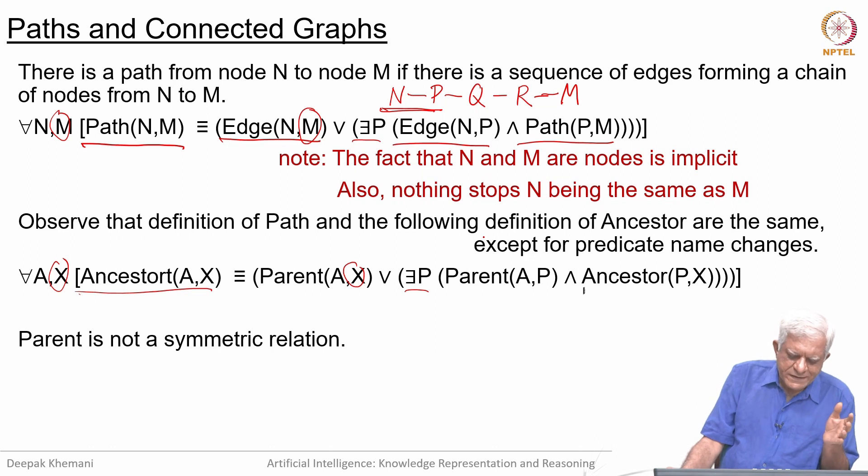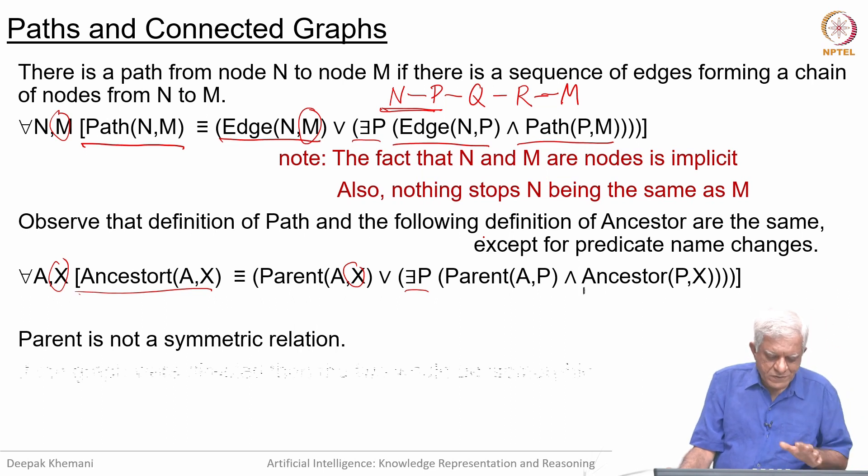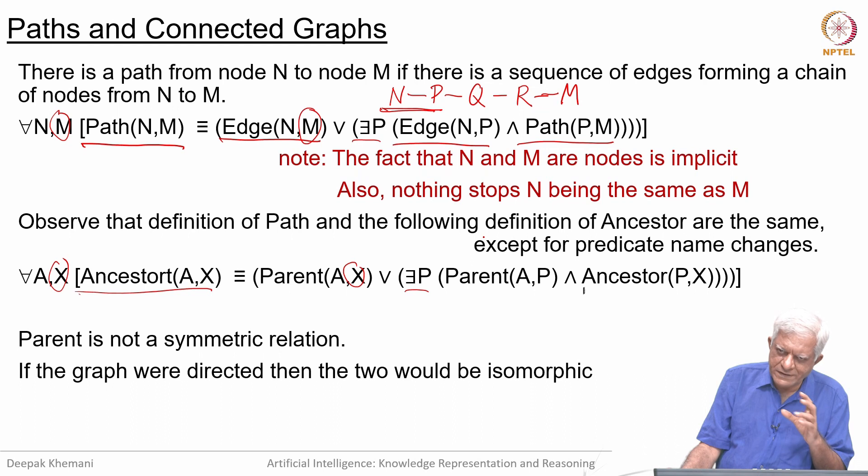The only difference is that parent is not a symmetric relation whereas we can define the edge to be a symmetric relation. If the edge was not a symmetric relation, which means that the graph was a directed graph, then the two would simply become isomorphic. If A is a parent of B then there is an edge from A to B. There would be no difference between the two domains.